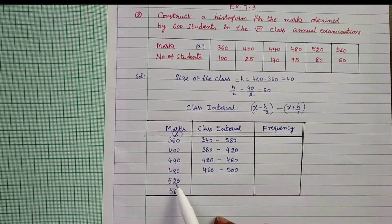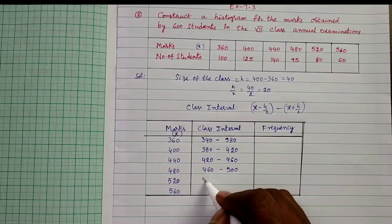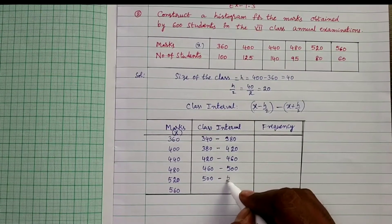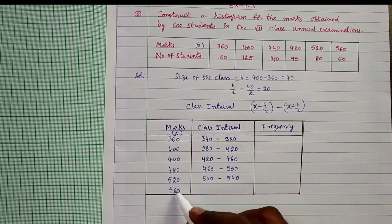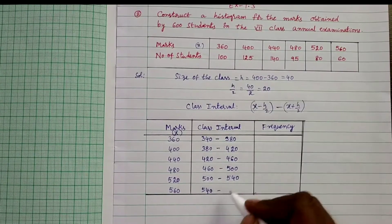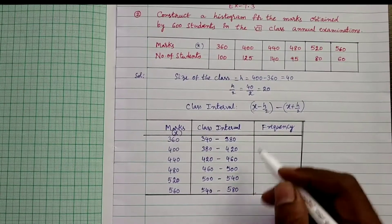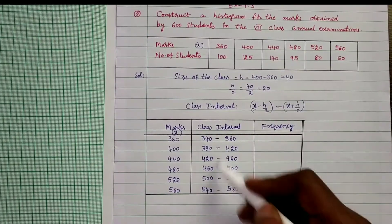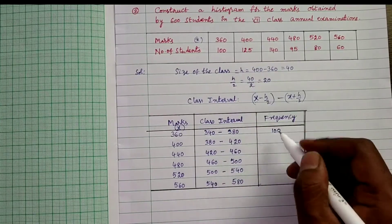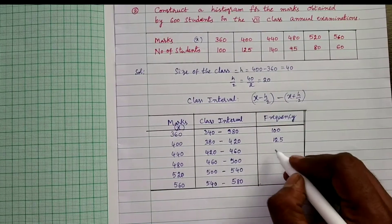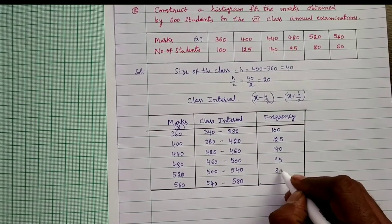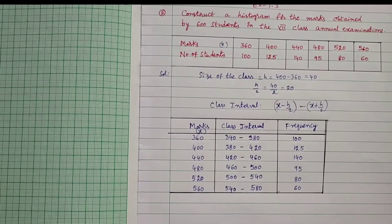For x = 520: 520 minus 20 = 500 to 520 plus 20 = 540. For x = 560: 560 minus 20 = 540 to 560 plus 20 = 580. By using this formula we construct all class intervals and write the given frequencies: 100, 125, 140, 95, 80, 60. These are the frequencies of the given data.